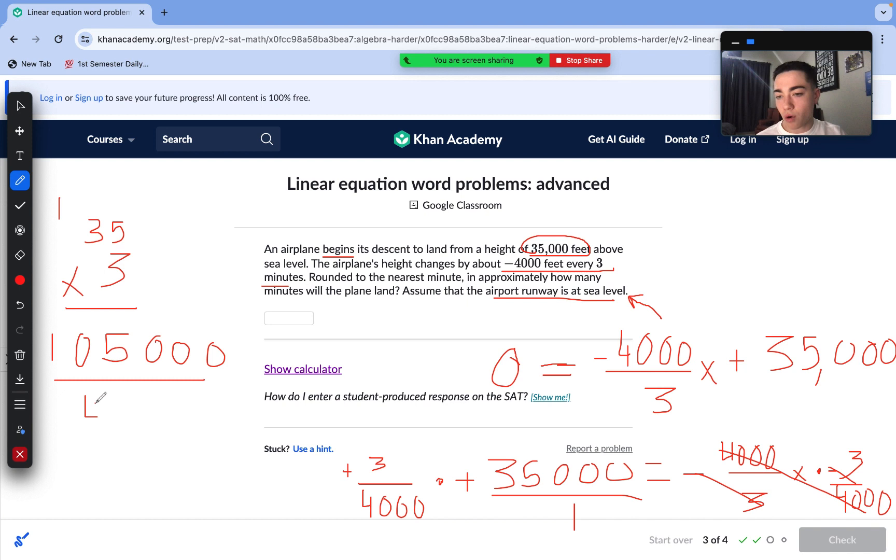And then, we divide this by 4,000. We have three zeros on each. So, we can cancel out each of those. We are just left with 105 over 4. So, let's go ahead and do that division here. 4 goes into 105, 2 times 8. We add that to 25. 4 goes into 25, 6 times. 4 times 6 is 24. And then, 1, 4 is 26.25.